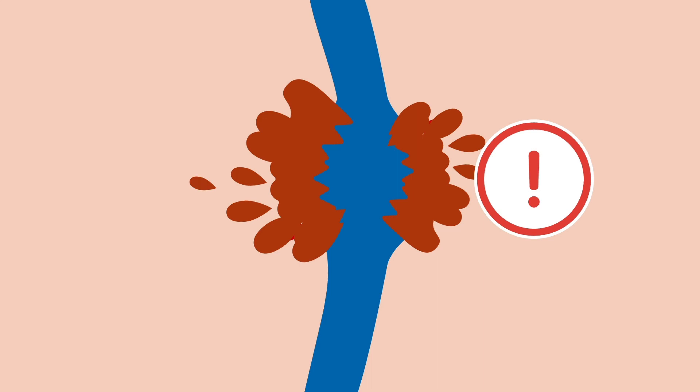Smaller aneurysms that are not quickly growing pose little risk and can be monitored over time. Rapidly growing aneurysms can be dangerous, however, because as the vessel wall stretches and thins, there is risk of the vein walls rupturing. This would be dangerous due to the high-pressure blood flow within the vein.